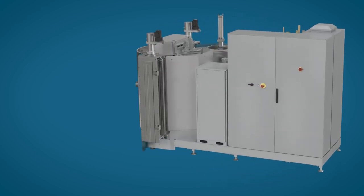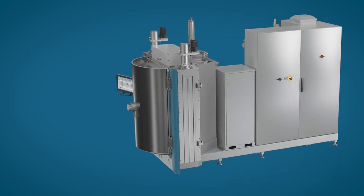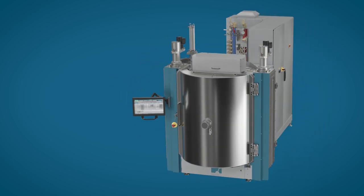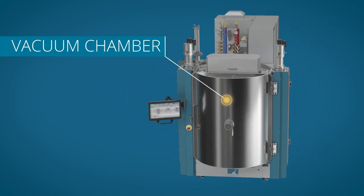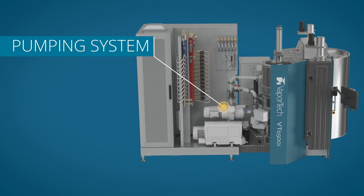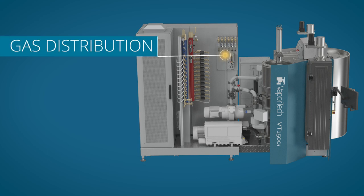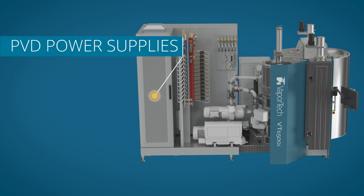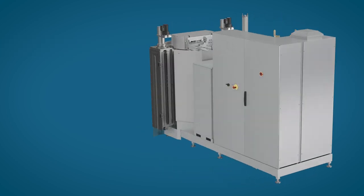The VT1500i PVD Coater consists of several primary subsystems, including a stainless steel vacuum chamber where coating is applied, a vacuum pumping system, process gas supply, a cooling system, PVD power supplies, and a control system.